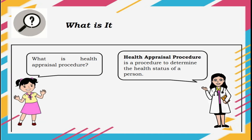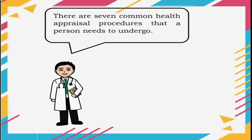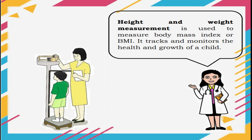What Is It? Health Appraisal Procedure is a procedure to determine the health status of a person. There are seven common health appraisal procedures that a person needs to undergo. Height and Weight Measurement is used to measure Body Mass Index or BMI. It tracks and monitors the health and growth of the child.